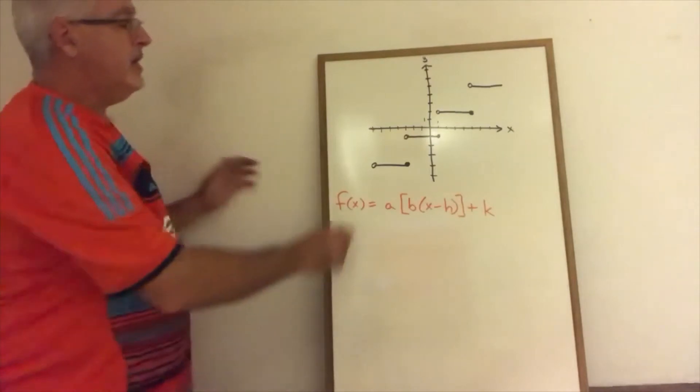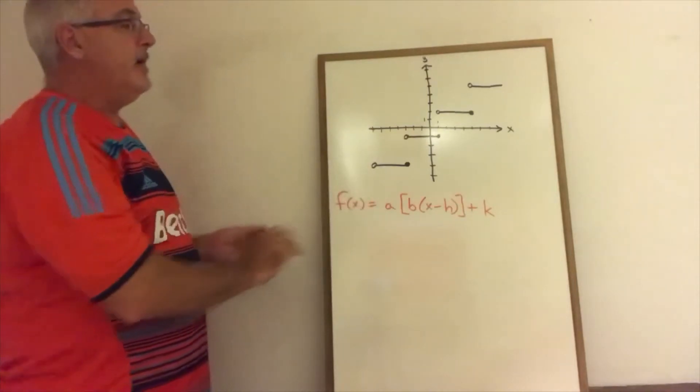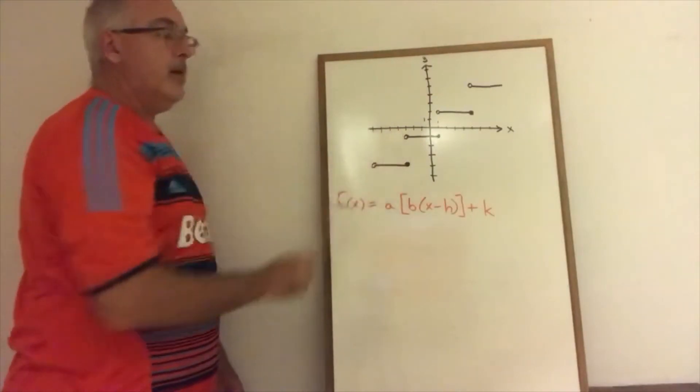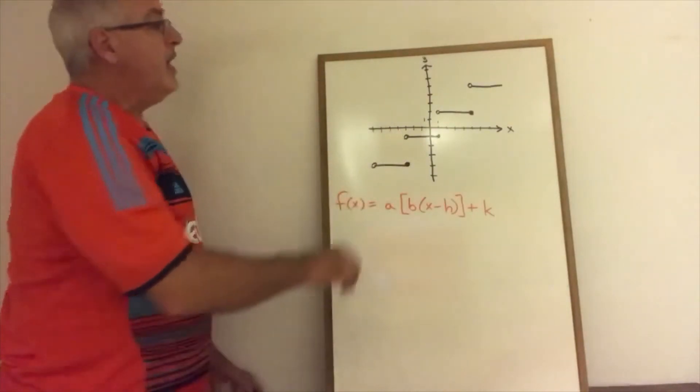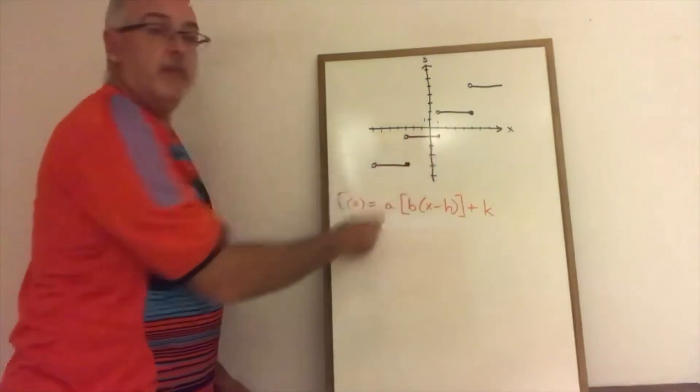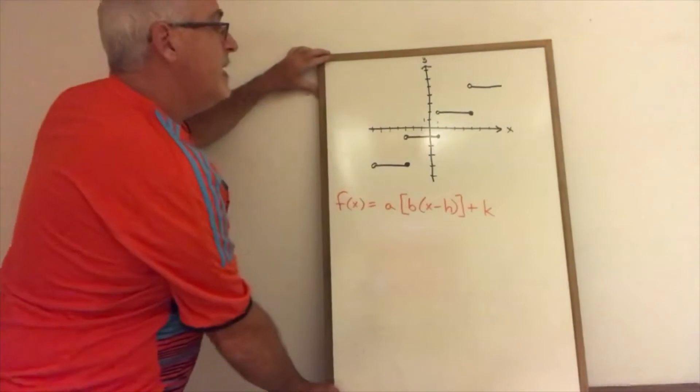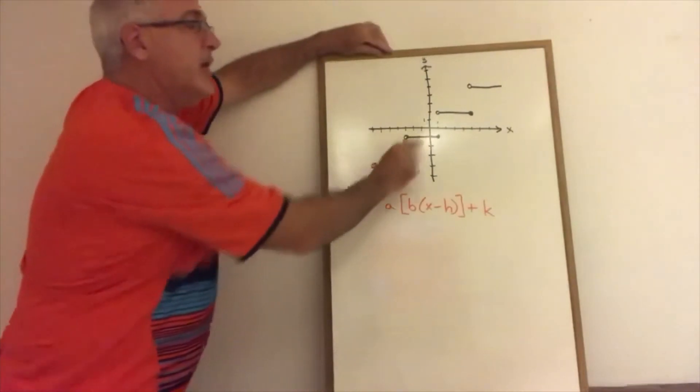Here in our graph we can see that we have steps that are four units in length, that are jumping up by three units in height, that are closed circle on the right and open circle on the left, and the steps are going upstairs.